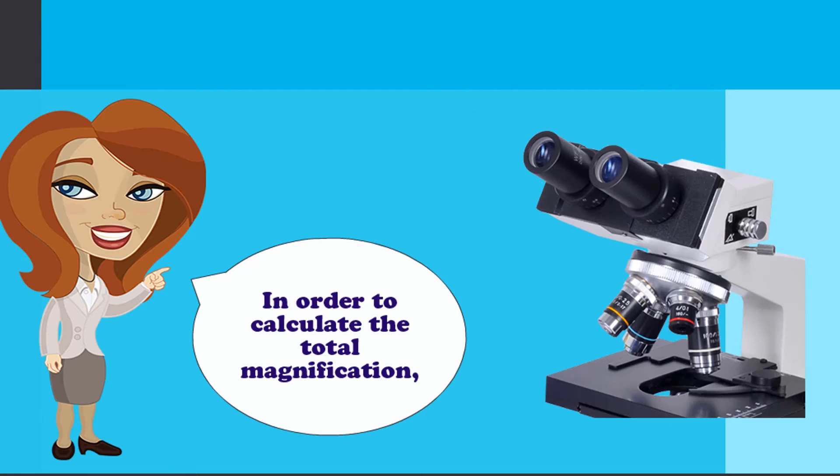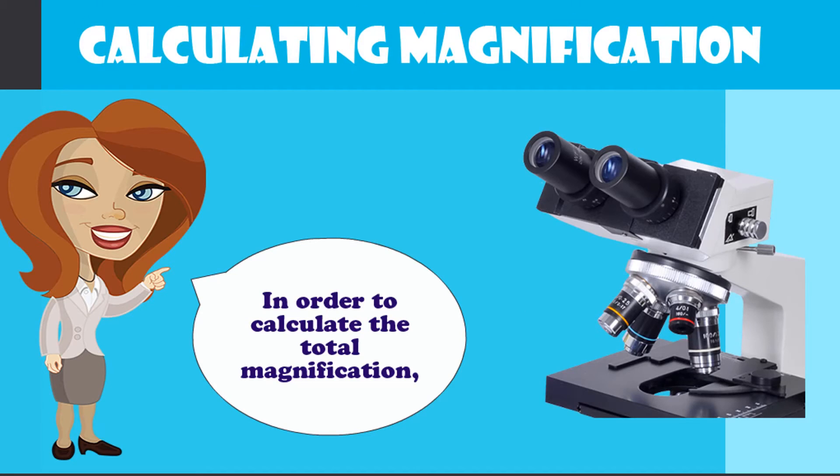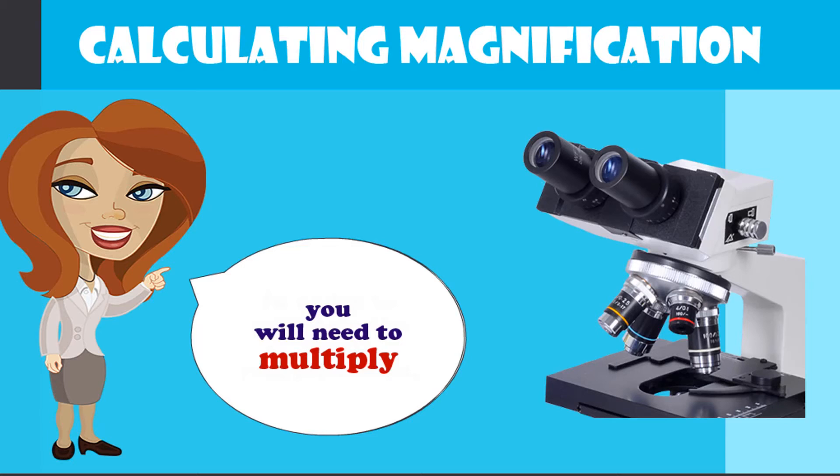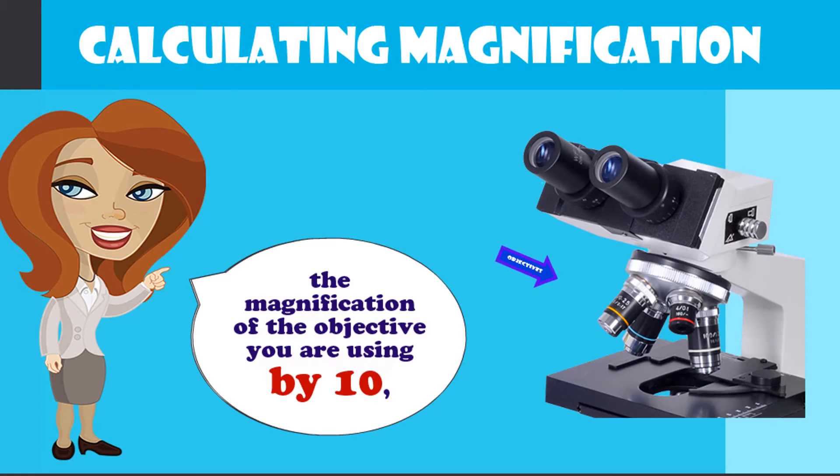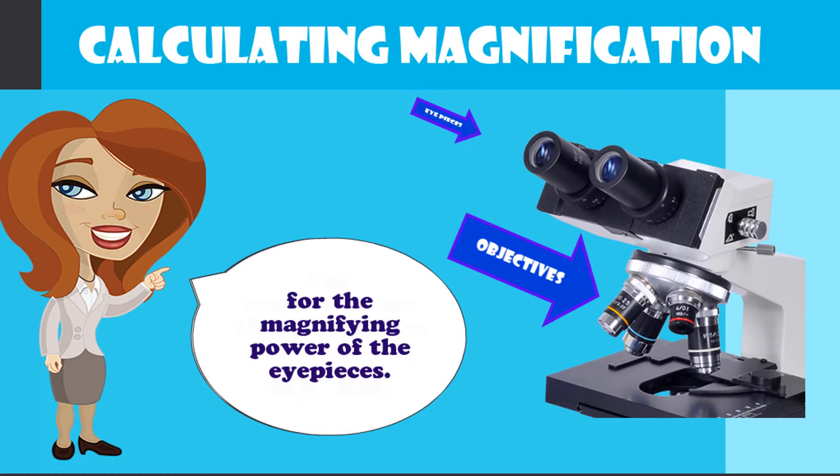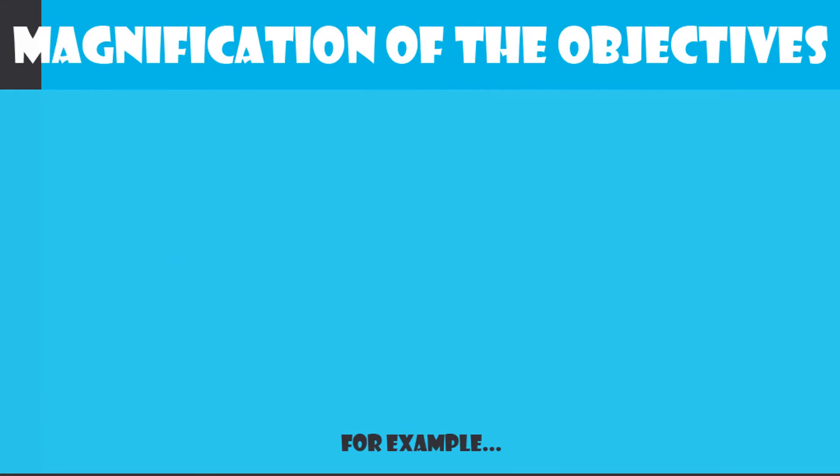In order to calculate the total magnification, you will need to multiply the magnification of the objective you are using by 10, for the magnification power of your eyepieces. For example, using your 4x objective now.